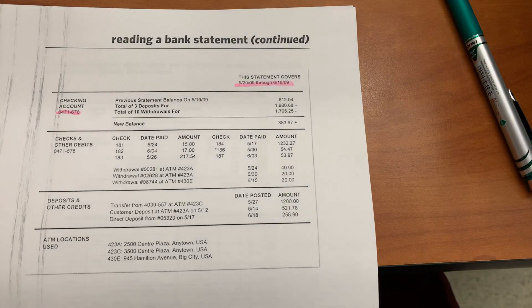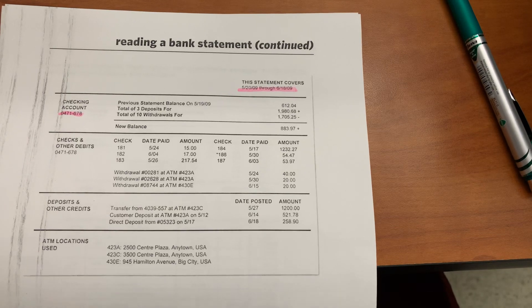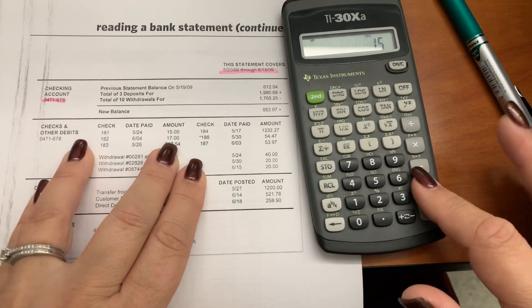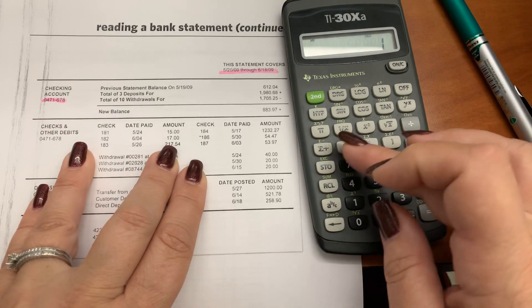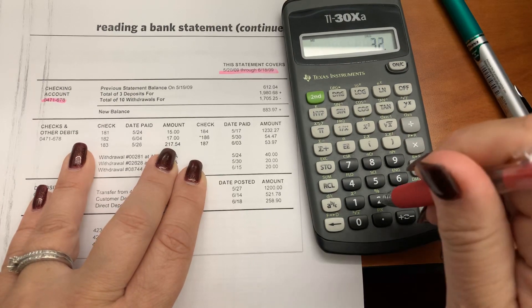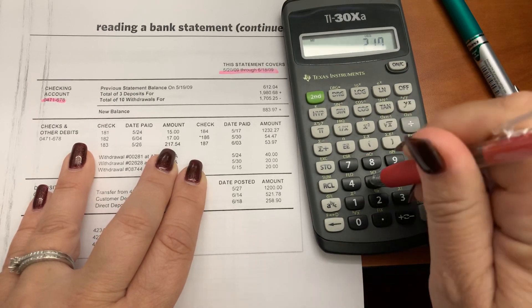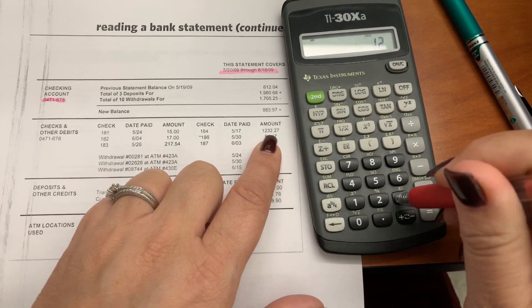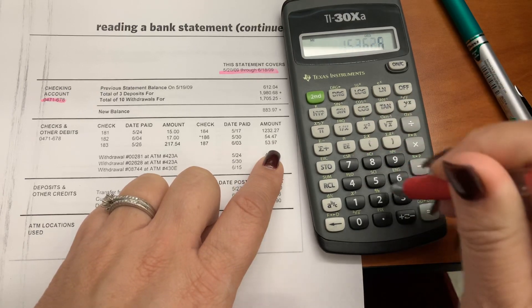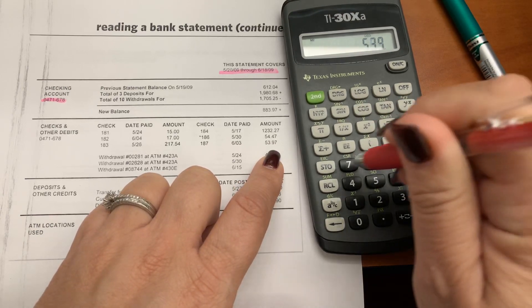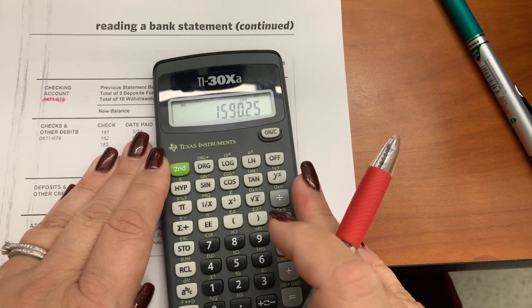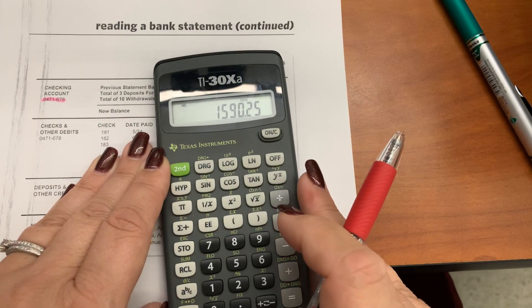So the cleared check amount total is 1517 plus 217.54 plus 1232.27 plus 54.47 plus 53.97. So a total of $1,590.25.